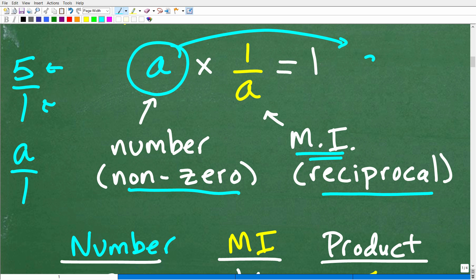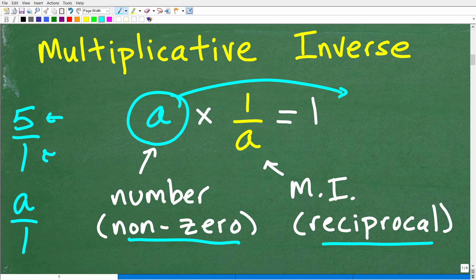So, for this example, A is the same thing as A over one. So, its reciprocal is where we're going to basically flip-flop the numerator and denominator. So, the one is going to become the numerator, and the A is going to become the denominator. So, one over A is the reciprocal. Now, why is that important? Well, the reciprocal is the same thing as a multiplicative inverse, and that means that when we multiply these two things together, A times one over A, the answer or the product is equal to one.